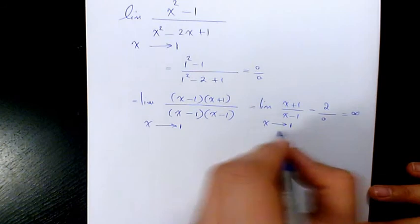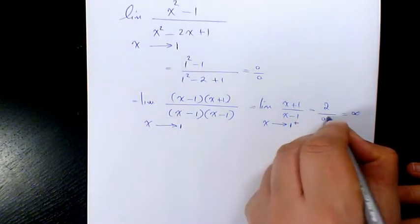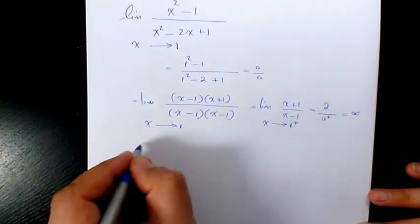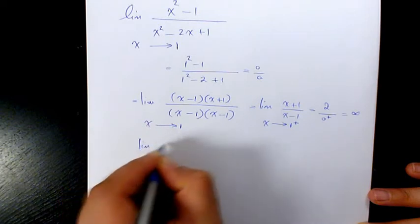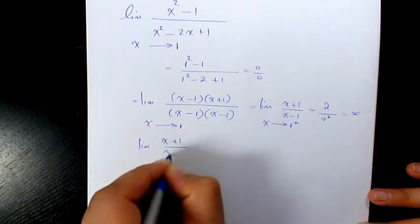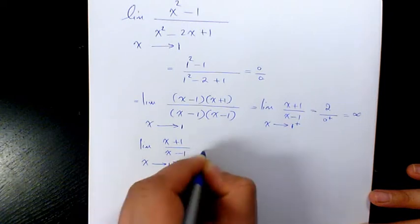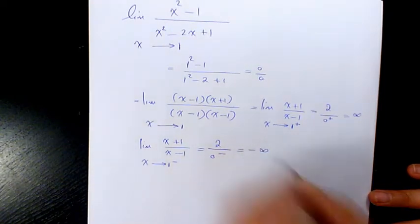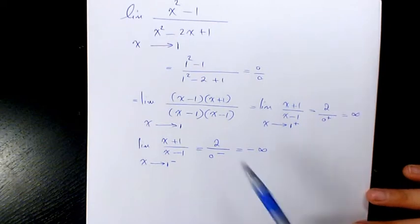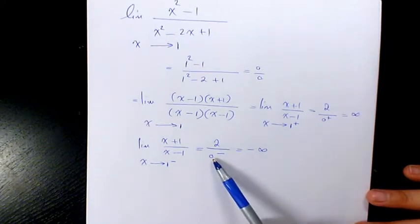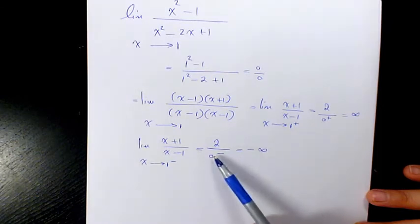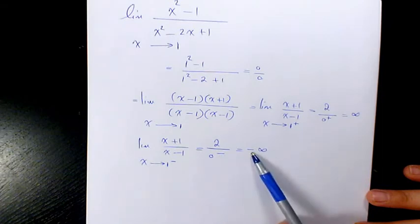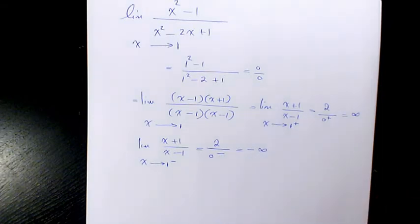When x approaches 1 from the right, the denominator is slightly positive, so the result is positive infinity. When approaching from the left, the denominator is slightly negative, and a positive divided by a negative number is negative, so the left limit is negative infinity.